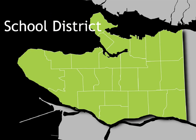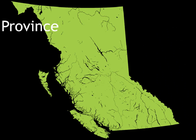Then what we do is we nest those neighborhoods within a geographic school district so that we can understand the differences that make a difference within a school district. And then finally, we nest the school districts within broader regional jurisdictions, such as the province of British Columbia, where we have 59 geographic school districts.